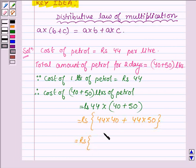Now, 44 into 40 is equal to Rs. 1760 plus and 44 into 50 is equal to Rs. 2200.